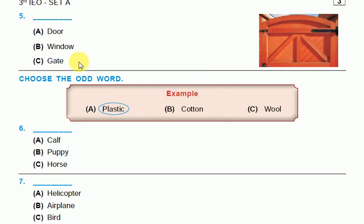Choose the odd word. Example: plastic, cotton, wool. Cotton and wool are near about the same, but plastic is different. Question number six: calf, puppy, horse. The horse is a different word.